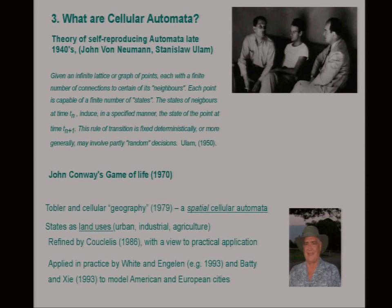As far as actually applying these definitions to geography, we've got Waldo Tobler — looking very relaxed in his retirement in Santa Barbara, California. He basically said a cell could be a grid, it could be a map, and our cells could contain land uses.